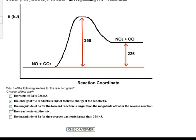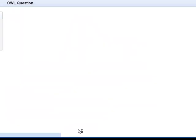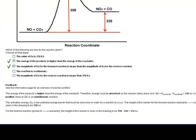The magnitude of E_A for the forward reaction is larger than the magnitude of E_A for the reverse reaction. The forward reaction activation energy is 358. The reverse reaction activation energy would be from the products level up to 358, meaning we subtract 226 from 358 to get the actual activation energy for the reverse reaction. So the forward reaction E_A is clearly greater than the reverse reaction E_A. The reaction is not exothermic — that's false because the products are at a higher energy state than the reactants. The magnitude of E_A for the reverse reaction being larger than 358 is also not true. So we only check two of these items.